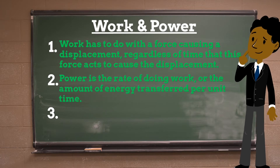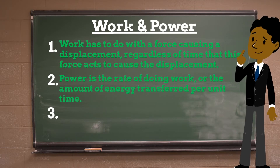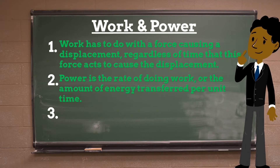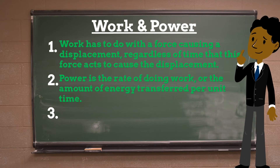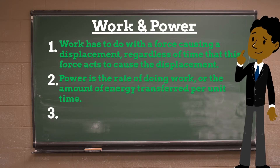The quantity that has to do with the rate at which a certain amount of work is done is known as power, which is the rate of doing work or the amount of energy transfer per unit time. The SI unit of power is the watt, which is equal to one joule per second.